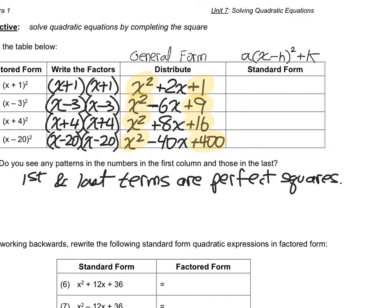That tells me that if we needed to factor, we could actually go the other way pretty easily. That's what the second table is all about — getting from the expanded form to the factored form quickly and easily without having to make an x chart. The standard form is really just modifying the original expression so that it follows this pattern.